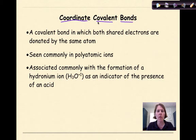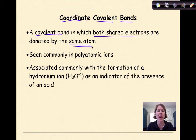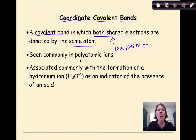Then we have something known as a coordinate covalent bond. A coordinate covalent bond is a covalent bond in which both shared electrons are donated by the same atom. Specifically, we're going to be talking about lone pairs of electrons here. We see them commonly in polyatomic ions — not all polyatomic ions have coordinate covalent bonds, but a good majority that we use in class do.